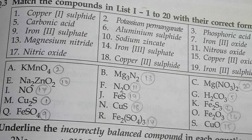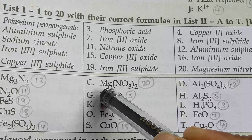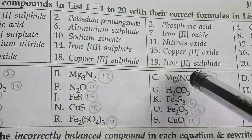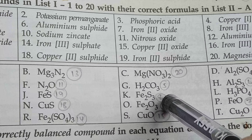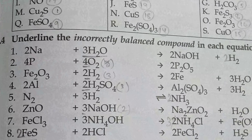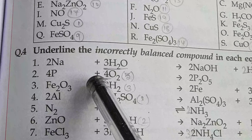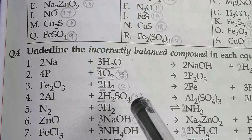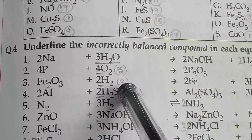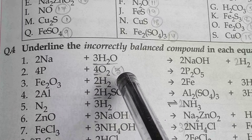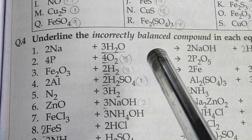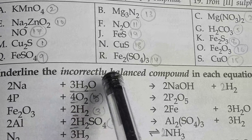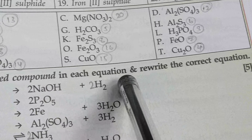Iron 3 sulfate — Fe2(SO4)3. Copper 2 oxide — CuO. Iron 3 oxide — Fe2O3. Nitric oxide — NO. Copper 2 sulfide — CuS. Iron 2 sulfide — FeS. Magnesium nitrate — Mg(NO3)2.